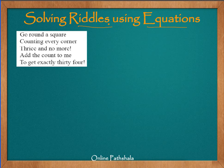So the first one says: go around a square, counting every corner, thrice and no more. Add the count to mean to get exactly 34.